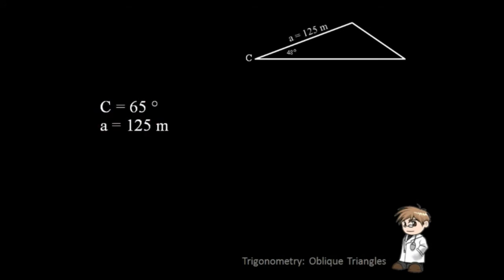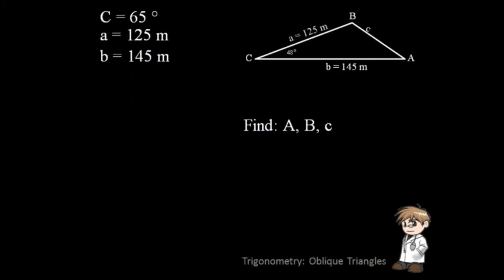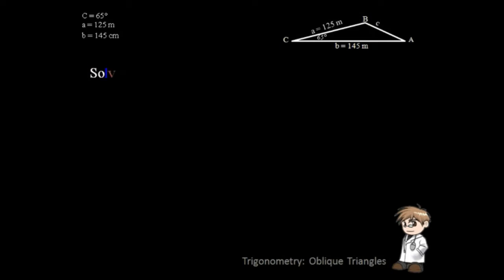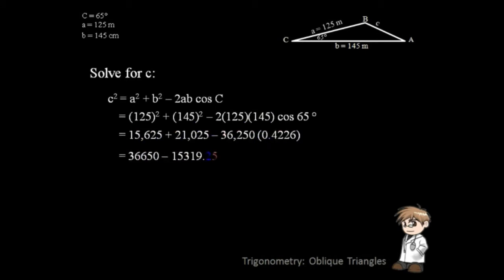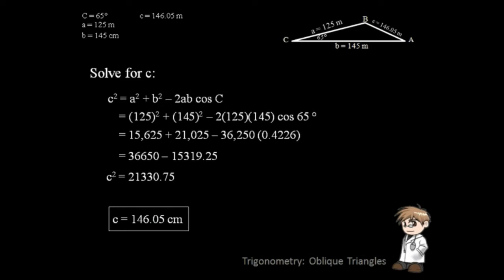Let us apply this to a problem. Solve the triangle with the following given. Let's start solving side C. To solve side C, we will use the Law of Cosine. Now let's place the values and start solving it. Don't forget to get the square root as your final answer.